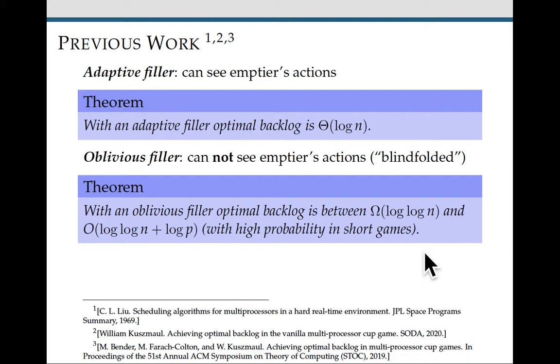In particular, if p is less than log n, then the oblivious filler here can't get more than log log n backlog, which is a lot smaller than the backlog it was getting when it was adaptive.